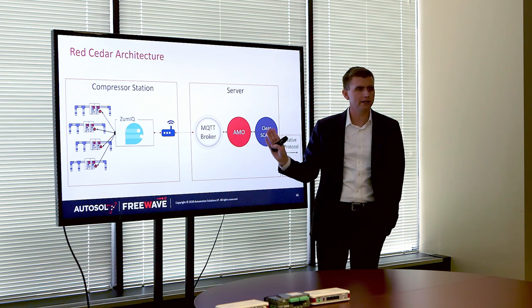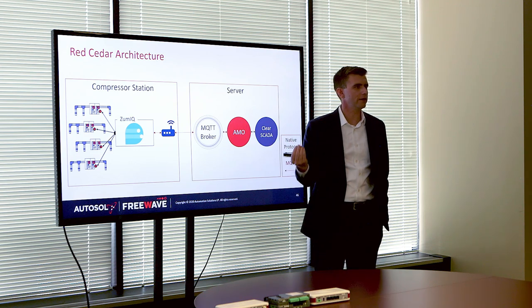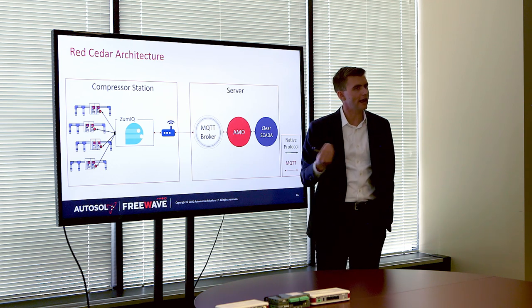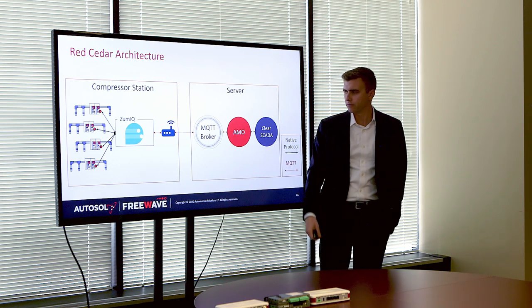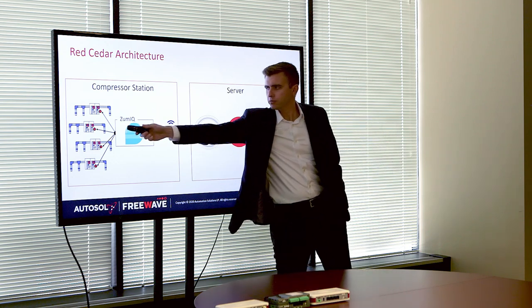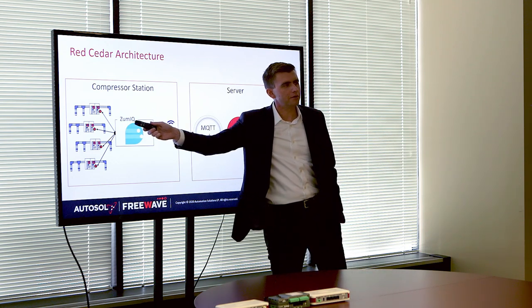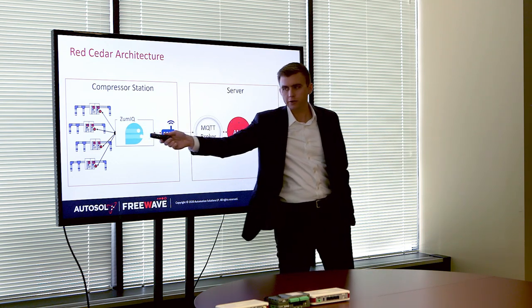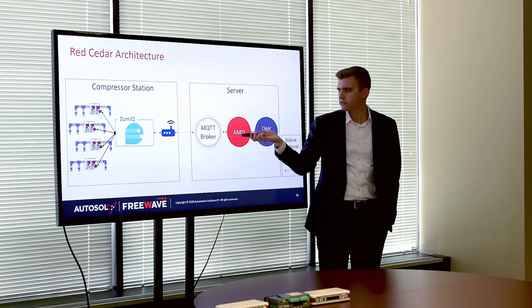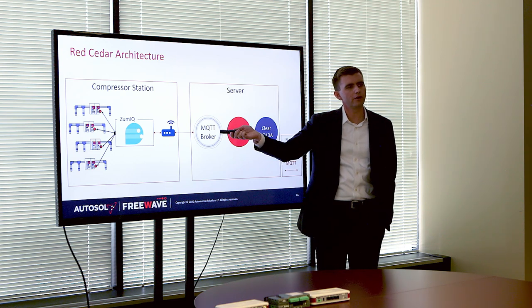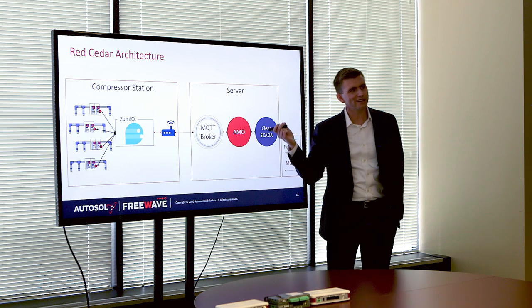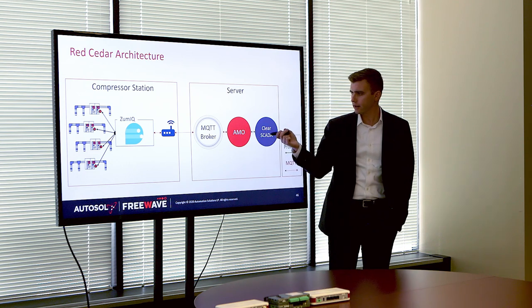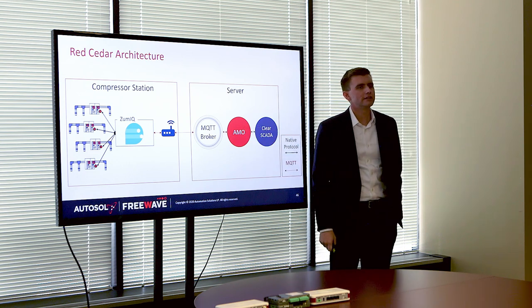Time was of the essence for them because they are getting fined $40,000 for every missing data incident. They wanted to get this out as soon as possible. So what we're doing is native protocol between Edge ACM and the device, MQTT to the broker. The Autosol MQTT to OPC converter takes everything off that broker and converts it to OPC DA, so an OPC DA client like ClearSCADA can then just get that data.